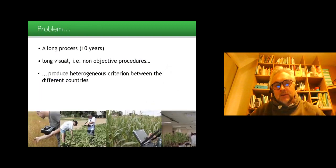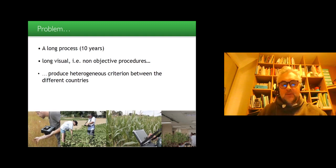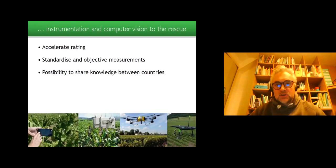That's a problem indeed, because selections of new varieties take a long time. It's something like a 10 years process at the moment. And it's based on long, visual, non-objective procedures, which are, on top of it, heterogeneous between countries, so that there is a kind of difficulty to communicate between each country based on which criterion the varieties to be used have been selected.